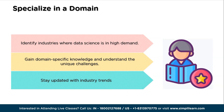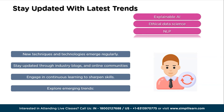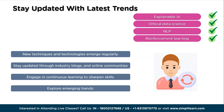You also have to stay updated with the latest trends. Data science is a rapidly evolving field with new techniques and technologies emerging regularly. Stay updated by following industry blogs, attending conferences, and participating in online communities. Engage in continuous learning to keep your skills sharp. Explore emerging trends like explainable AI, ethical data science, natural language processing (NLP), and reinforcement learning.